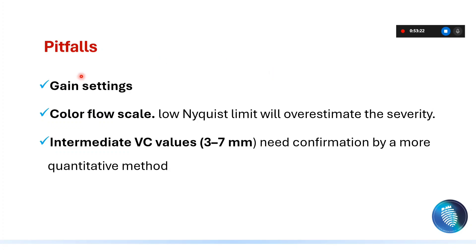What are the pitfalls of the vena contracta? First, it will be affected by the gain settings. Second, it depends on the color flow scale — a low Nyquist limit will overestimate severity. Lastly, intermediate values between 3 and 6 mm will need confirmation by a more quantitative method. In gray zones, do not depend only on the vena contracta or the color jet expansion; instead calculate the regurgitant volume and regurgitant orifice area.